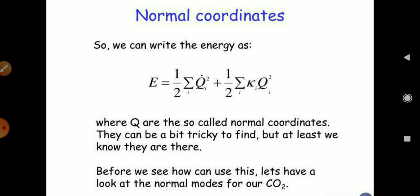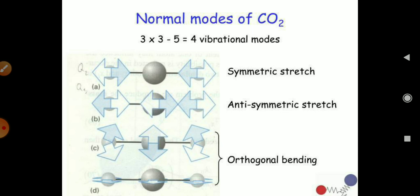If we talk about the normal coordinates, we can write the energy as E = (1/2) Σᵢ q̇ᵢ² + (1/2) Σᵢ kᵢ qᵢ², where q are the so-called normal coordinates. They can be a bit tricky to find, but we will see that in CO2 we have normal modes of vibrations. The vibrations are calculated as 3×3 − 5 = 4 normal vibrations. These are: symmetric stretching, asymmetric stretching, and two orthogonal bending modes.